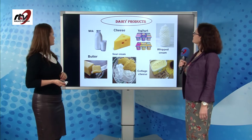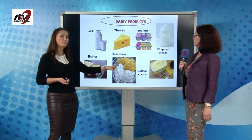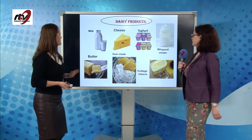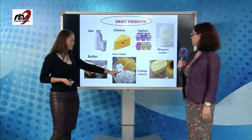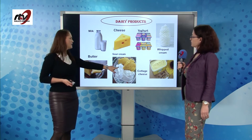Dairy products — of course, they are the products that are made of milk, that contain milk. So you have here milk, cheese — and there are different types of cheese — yogurt, whipped cream, butter. There you have margarine, which they say is not so healthy. Sour cream. Cottage cheese. And to make it traditional, polenta.